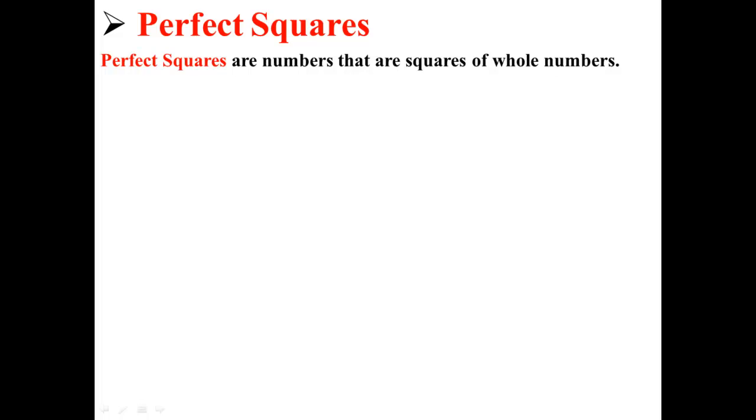Perfect squares are numbers that are squares of whole numbers. Here we have four perfect squares: 4, 9, 16, and 25.